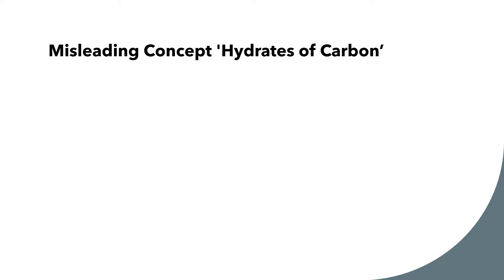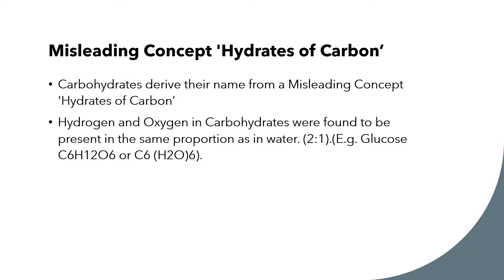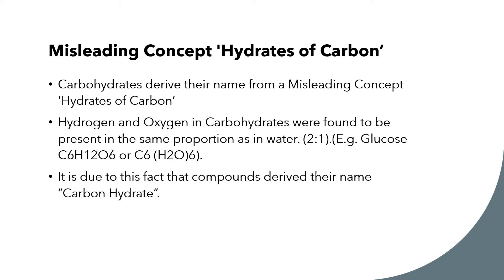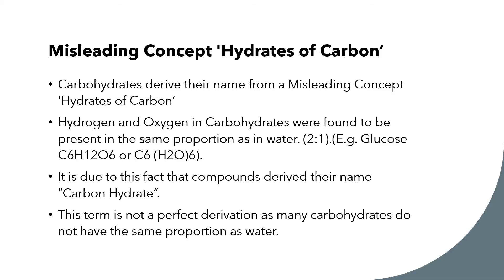A misleading concept is that carbohydrates are hydrates of carbon. Hydrates means the carbohydrate contains hydrogen and oxygen in the same ratio as water — 2 to 1, two hydrogen to one oxygen. But this is not true for all carbohydrates. It is true for most, like glucose, fructose, and ribose, but not correct for some, such as deoxyribose. Deoxyribose contains 10 hydrogens but only 4 oxygens, which is not a 2:1 ratio. So we cannot define all carbohydrates as hydrates of carbon — many are, but not all.